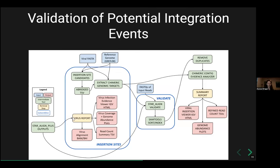Zooming in on the later sections of the pipeline: starting with STAR align plus outputs — the chimeric junction file and BAM file — these go into a reporting step in the middle of the pipeline. There should also be an arrow going into insertion site candidates. From there, you analyze chimeric reads for their potential to be viral insertion sites, then through extract chimeric genomic targets and into validation steps. Once validated, there's a bit more processing before finally reaching summary report, which outputs nice visualizations.